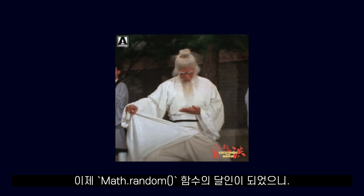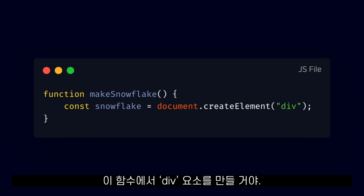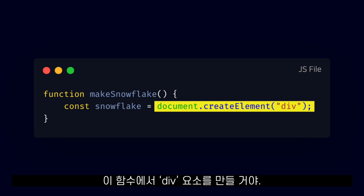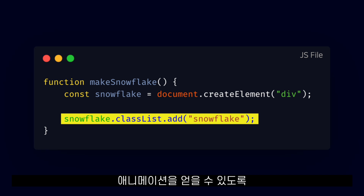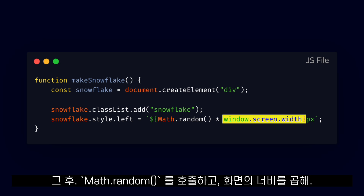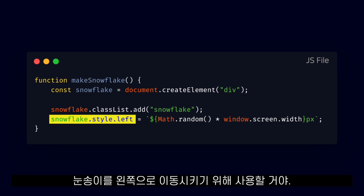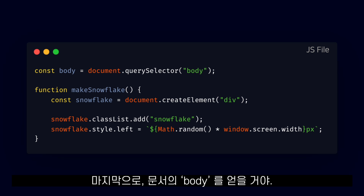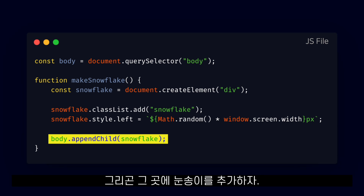Now that we are masters of Math.random, let's create a function called makeSnowflake in our JavaScript. In that function, we will create a div element and we will give it the snowflake class so it gets the styles and animations we wrote before. Then we will call Math.random and multiply it by the width of the screen, and we will use that value to move our snowflake to the left. Finally, we will get the body of the document and we will add the snowflake to it.